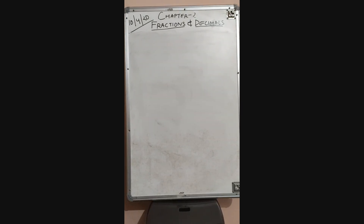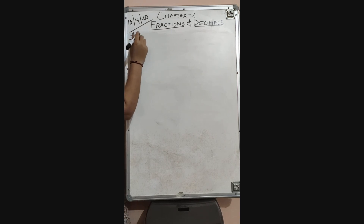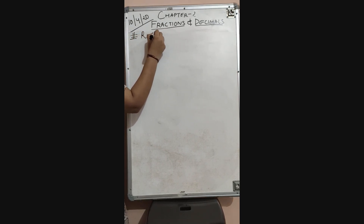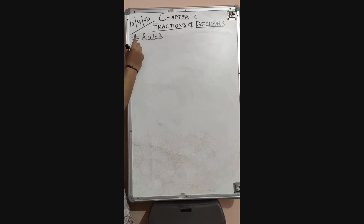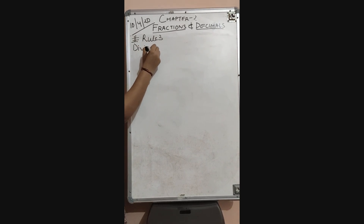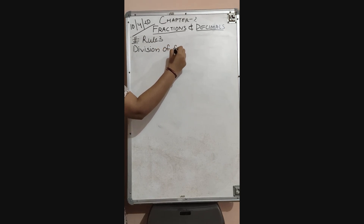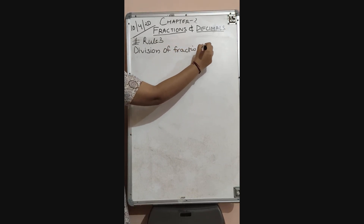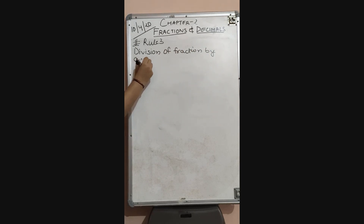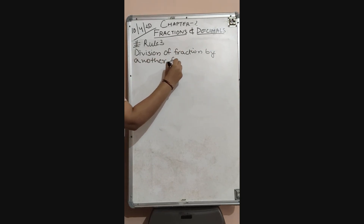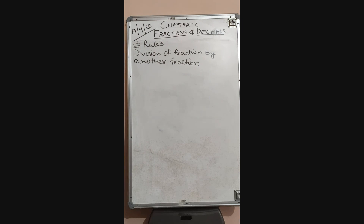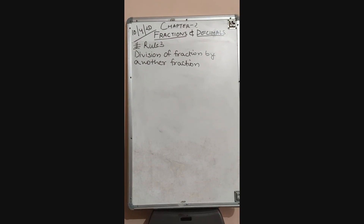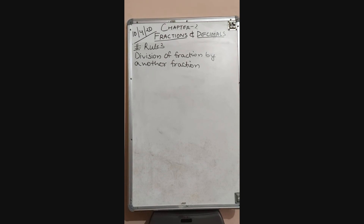Rule 3 is division of a fraction by another fraction. In this there is only one condition: to divide a fraction by another fraction, multiply the first fraction by the reciprocal of the second fraction.